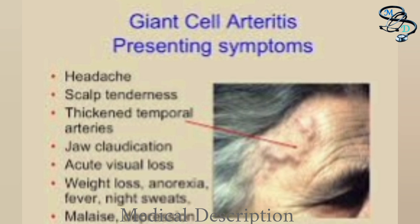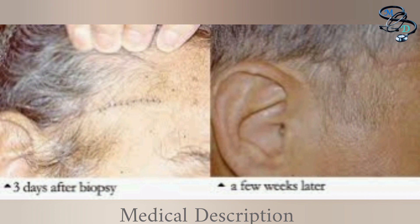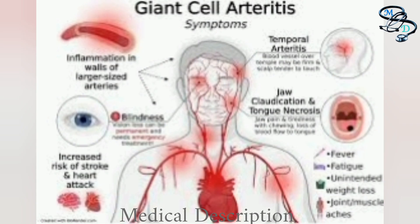The mainstay of therapy for temporal arthritis is glucocorticoids such as oral prednisone. Patients sometimes need to take glucocorticoids for up to two years, with dosage gradually reduced over this period. There are serious side effects associated with long-term use of corticosteroids, including a greater chance of fractures because steroids can make bones thinner and brittle, and increased infections because steroids suppress the immune system.